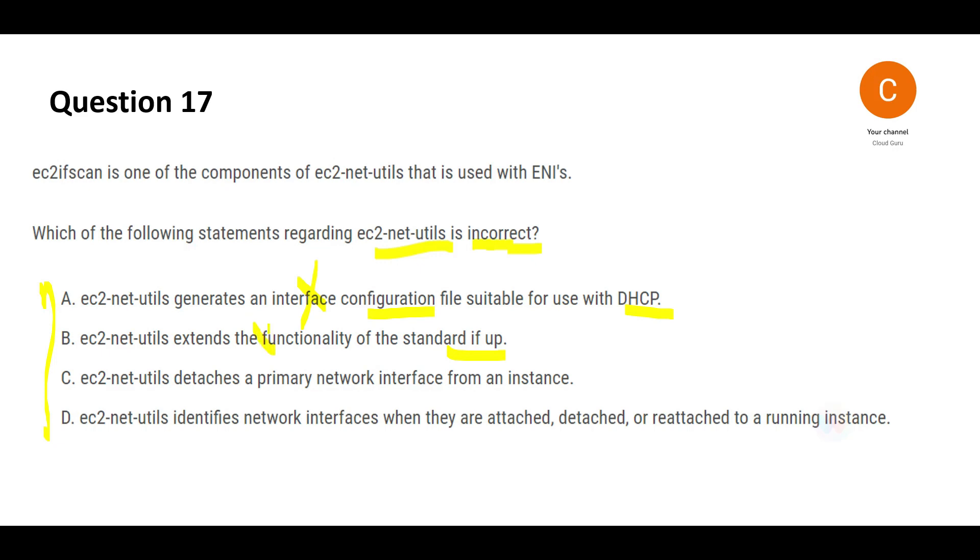Let's look at C. It says net-utils detaches a primary network interface. It does not detach. This is wrong, and hence this answer is correct because we want to choose what is incorrect.